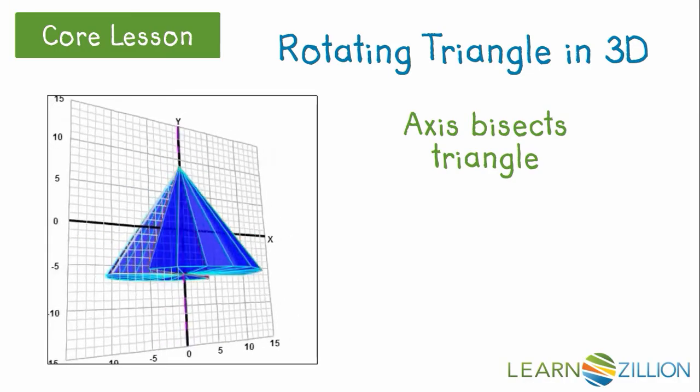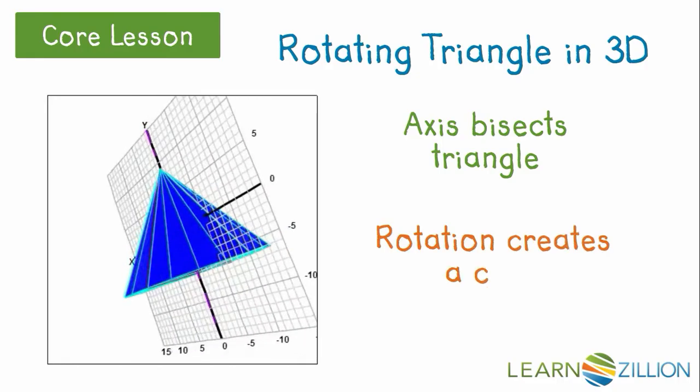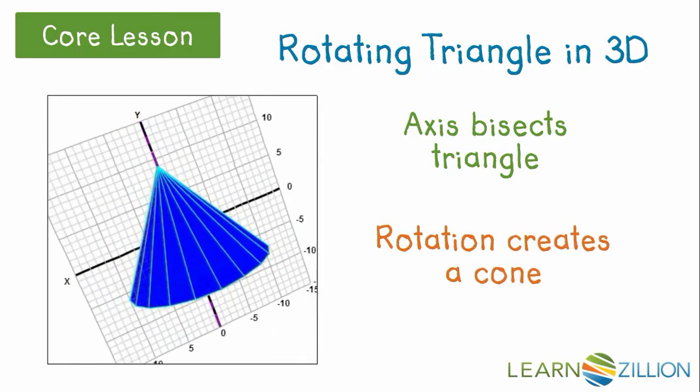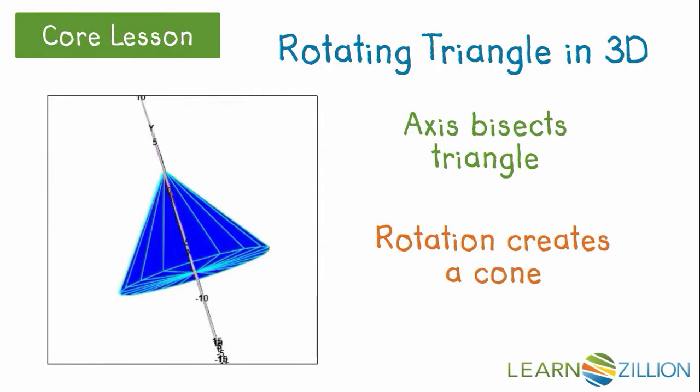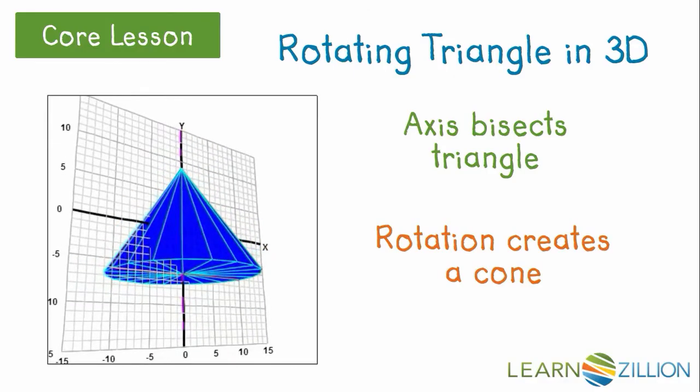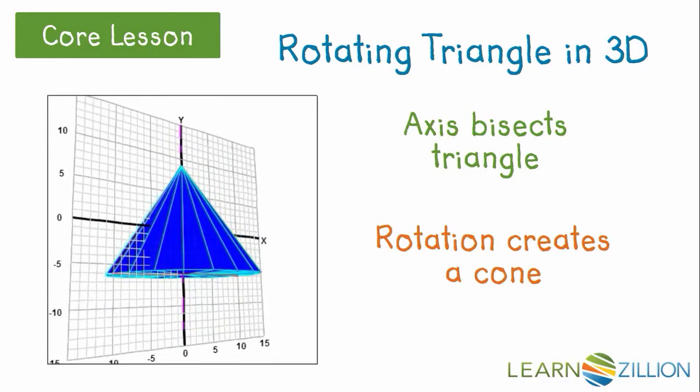It's interesting to see that the edge that was perpendicular to the axis drew a flat surface as it rotated. And the other two edges, as they rotated, created a curved surface. So, the rotation of a triangle creates a cone if the axis of rotation bisects through a vertex.